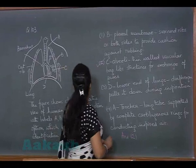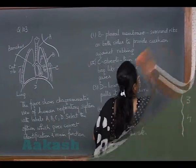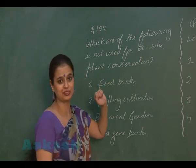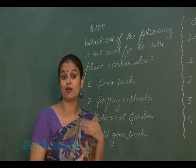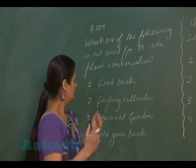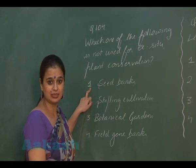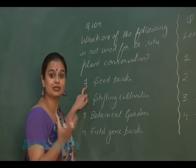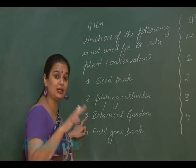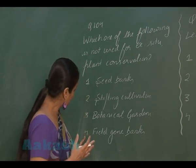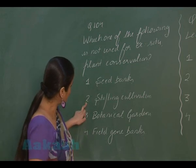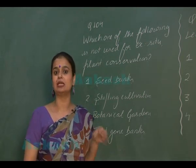Question 104: We have to choose the odd one out with respect to ex-situ conservation. Ex-situ conservation is off-site conservation — the conservation of organisms outside their natural habitat. Option 1, seed banks, is correct ex-situ conservation. Option 3, botanical gardens, conserves plants by growing them. Option 4, field gene banks, conserves the gene pool.